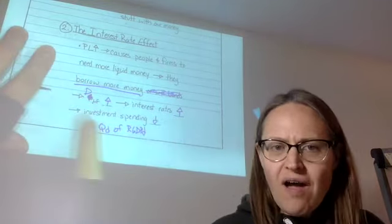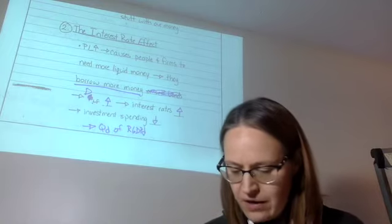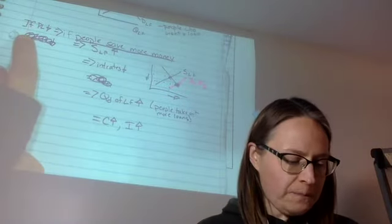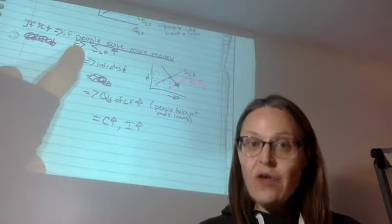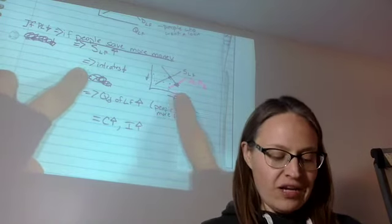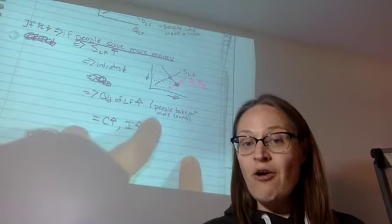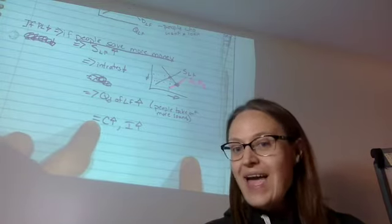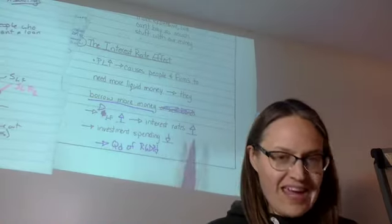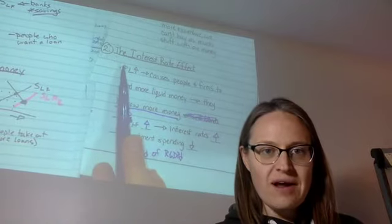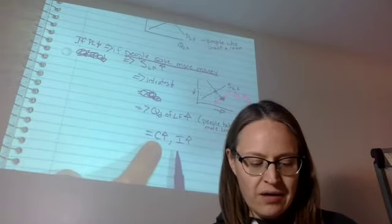Your book talks about this. However, everywhere else — in the other videos I've asked you to watch — they talk about the other scenario: if the price level goes down, people would be able to save more money, which means the supply of loanable funds goes up, then interest rates go down, then quantity demanded of loanable funds goes up, people take out more loans, therefore consumption goes up and investment goes up. This gives you the same answer — price level goes down, quantity demanded of real GDP goes up.